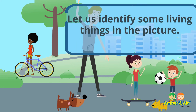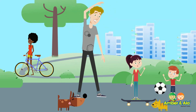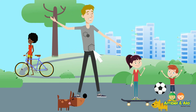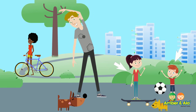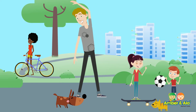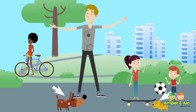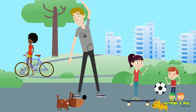Let us identify some living things in the picture. The man is a living thing — do you see how he moves? The children are living things because they are moving. That lady with the bicycle, she's also a living thing. The animals are living things too. This dog and this cat are living things; they move, breathe, and grow.